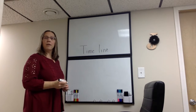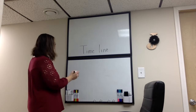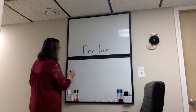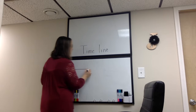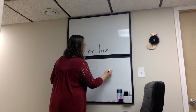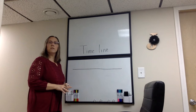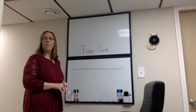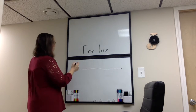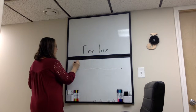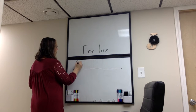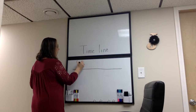Next, I'm actually going to draw a line. This is going to represent the events that happened in George Washington's life.